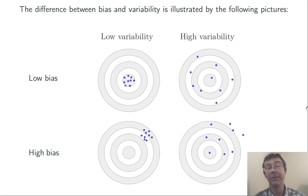On the upper right, high variability, but low bias, my darts are centered around the bullseye, but they're very spread out. The lower right shows the worst case scenario. My darts are both very spread out, and the center of them is not at the bullseye.